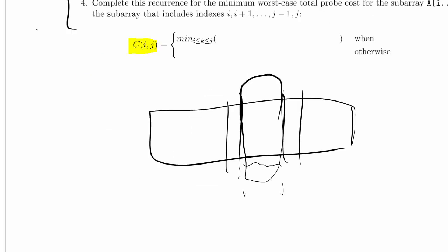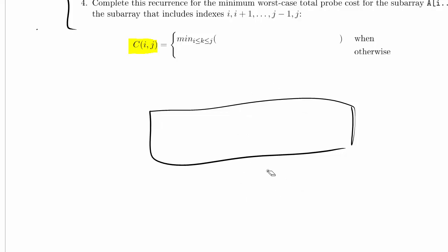That corresponds very nicely to what I was saying earlier. Given an array that we're working on, what we're going to do is try out roots. We're going to try each element as the root and try out all the other possibilities until we find the root that's the best one — the one that has the minimum overall cost, the minimum worst-case total probe cost. So k is the index of the root, and we're going to try out all the possible values for k, from the leftmost index all the way up to the rightmost index.